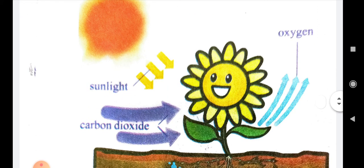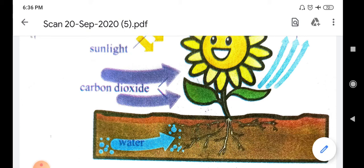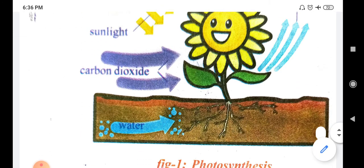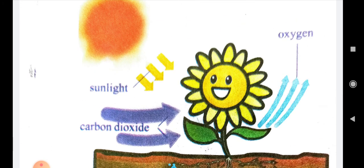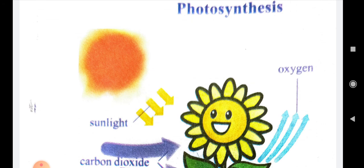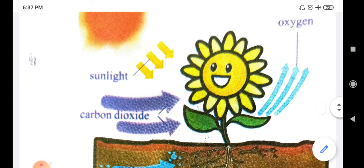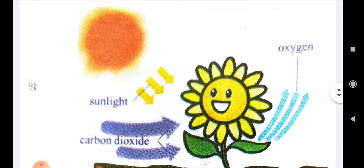First of all, we have to know what raw materials are required for photosynthesis. Water is one raw material, carbon dioxide is one raw material, sunlight is one raw material, and chlorophyll — present in the leaf — is also one raw material. So the four raw materials are water, carbon dioxide, sunlight, and chlorophyll. After the process of photosynthesis, oxygen will be released back into the atmosphere, water will also be released, and starch or glucose will be formed. Excess glucose will be converted to starch and stored in the plant body.